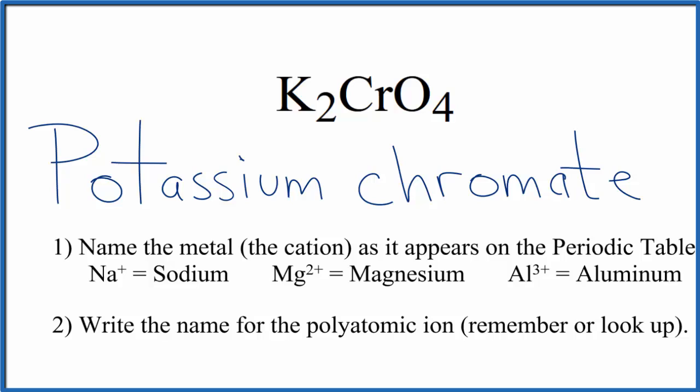So if you were given the name and asked to write the formula, you know that the chromate ion here, the whole thing you've memorized or looked up, is two minus.